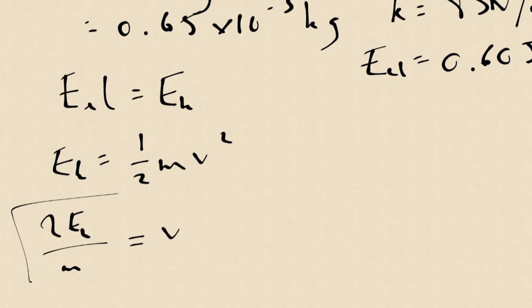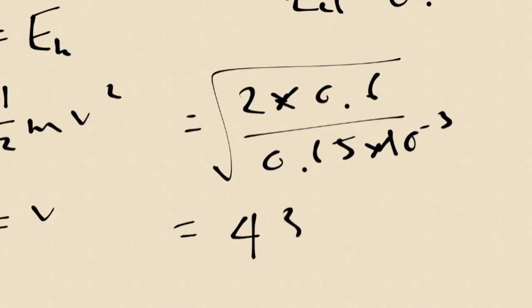So in the calculator I'm going to type in the root of 2 times 0.6, over 0.65 times 10 to the minus 3. 43 meters per second. So initially that pellet was leaving the catapult at 43 meters per second.